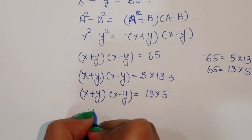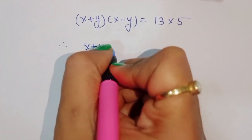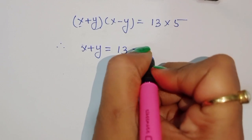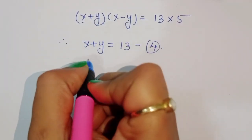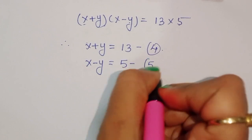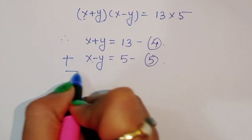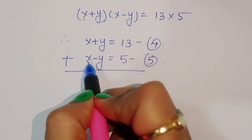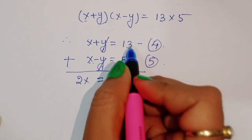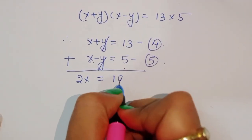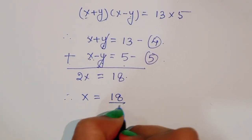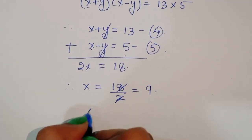Now adding equations 4 and 5: (x plus y) plus (x minus y) gives 2x, and the y terms cancel. So 2x equals 13 plus 5, which equals 18. Therefore x equals 18 divided by 2, which equals 9. So x equals 9.